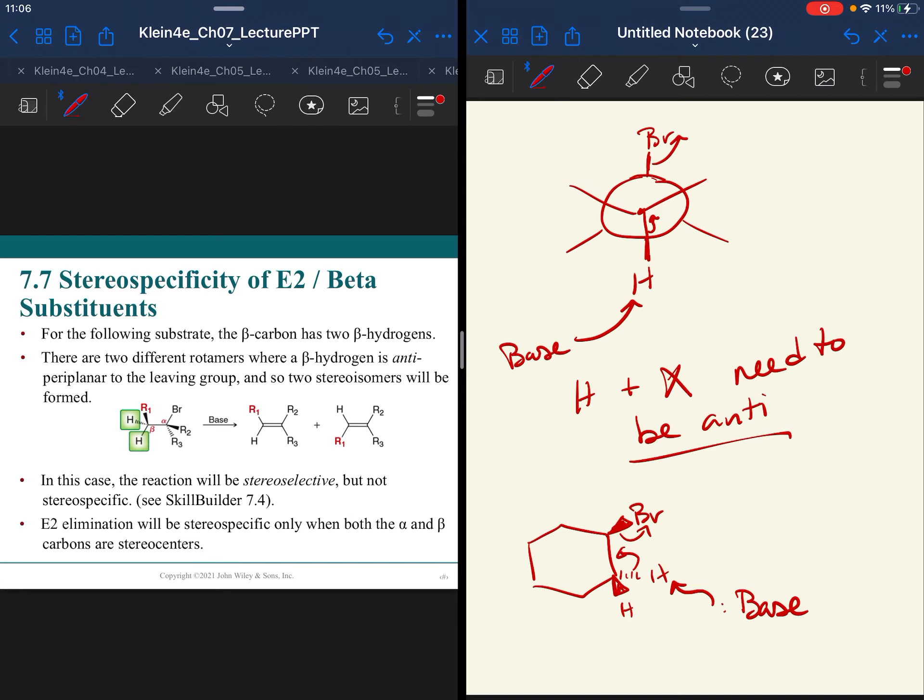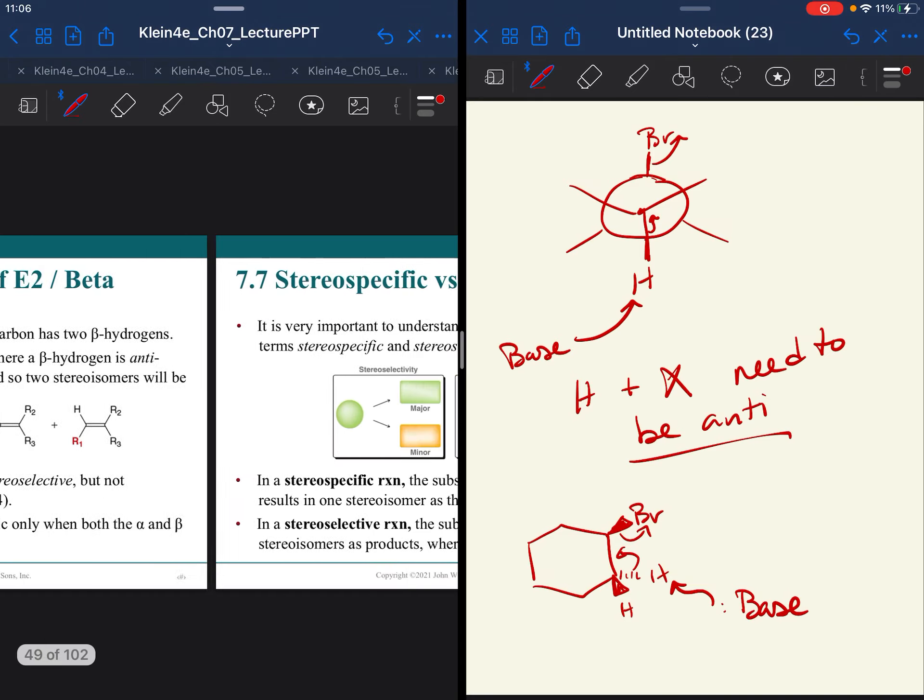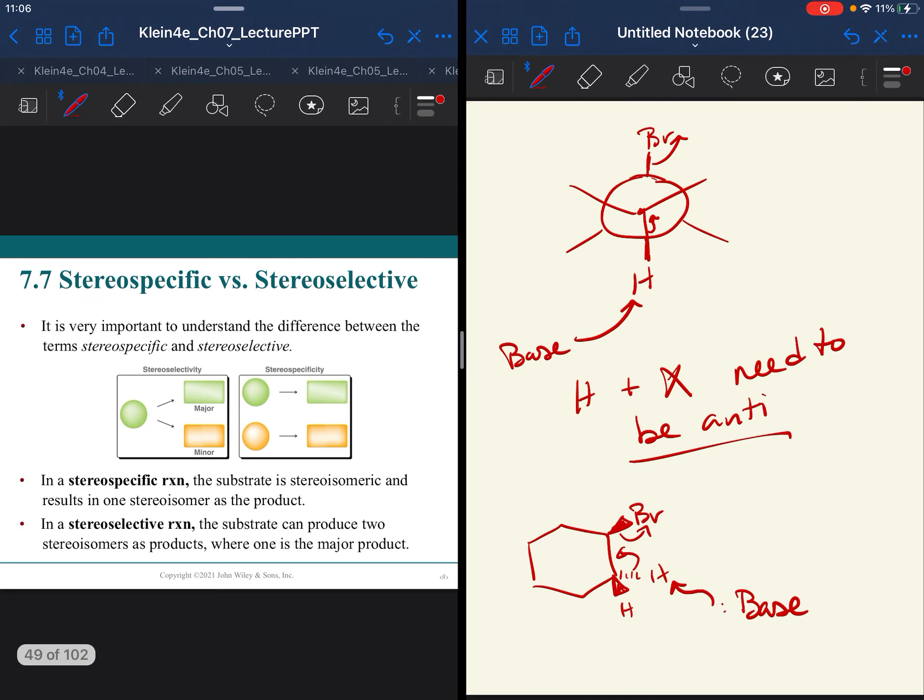It is considered stereoselective in this case because you can make trans and some cis. I'm not going to ask you to determine between cis and trans products. This is just a nice graphic on the difference between specific and selective that I mentioned a little bit ago.